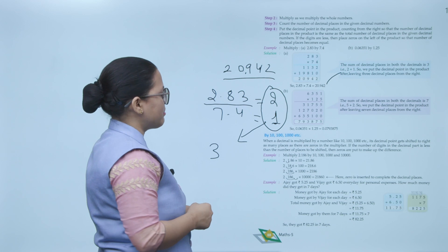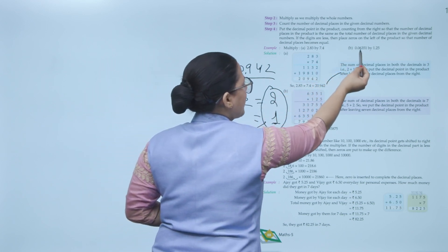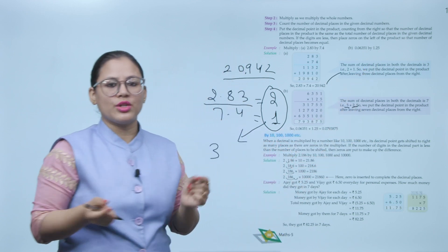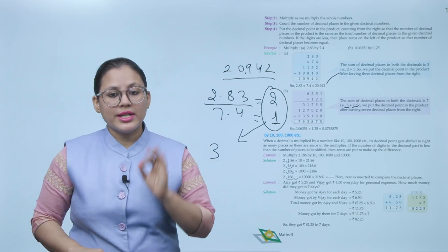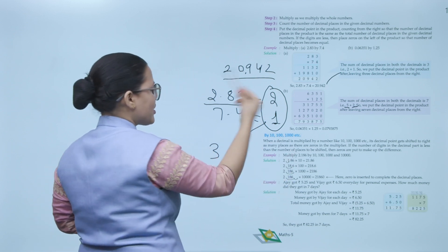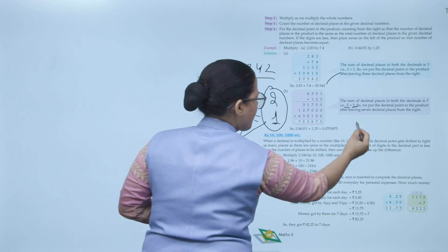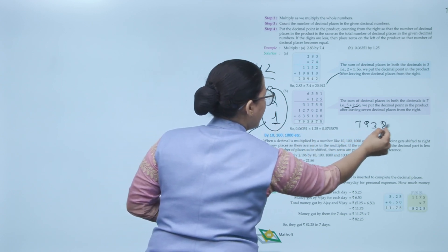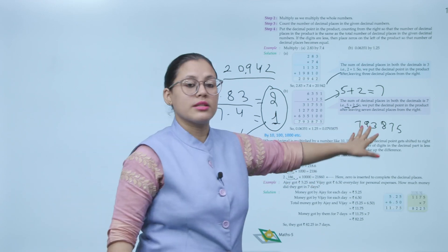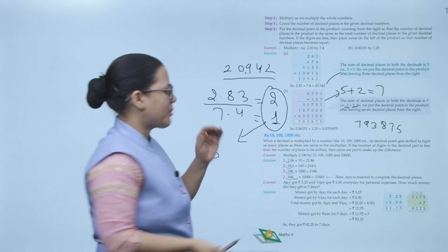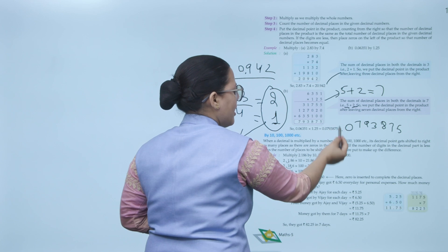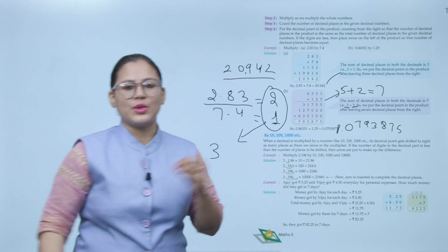In the next example, the first decimal has five decimal places and the second has two, so the total is seven. We put the decimal point in the product after leaving seven decimal places from the right. The product digits are 7938750, but we have only six digits. Since we need seven decimal places, we simply add a zero on the left. Then count from the right: one, two, three, four, five, six, seven — and place a zero before the digits, then the decimal point.